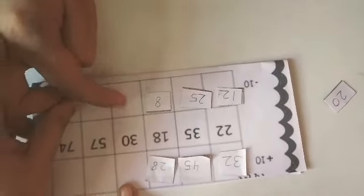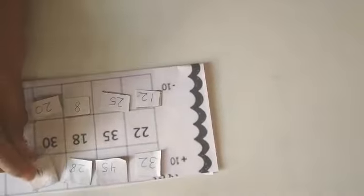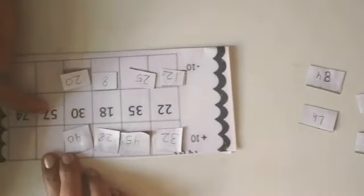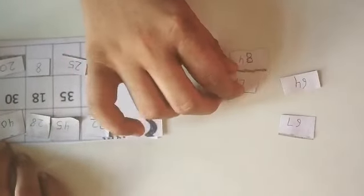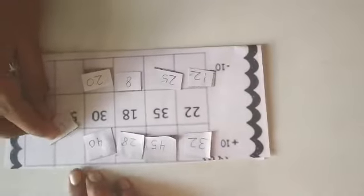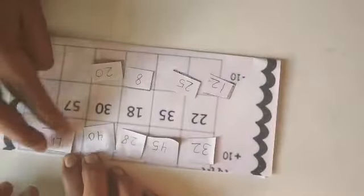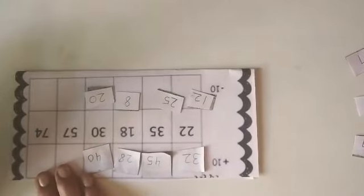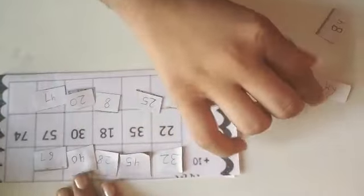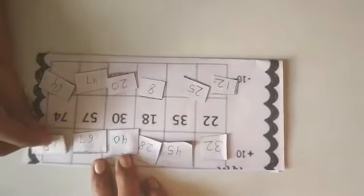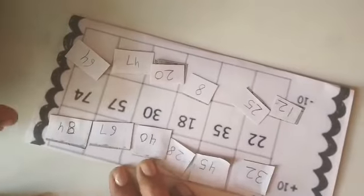Good boy. Next one — 30. Minus 10: good, 20. And plus 10 will be 40. Very good. 57 — minus 10 will be? Put it properly. Good. Minus 10. Very good. Plus 10. Good. 67. Last one — 74. Minus 10. Good. 64. And plus 10 — put it properly. Good. 84. Very good. Give me 10.